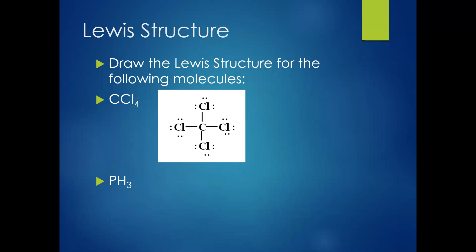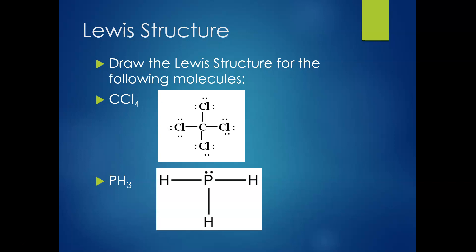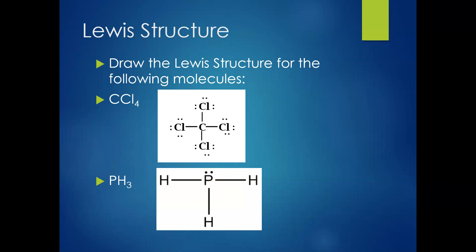For PH₃, your share should have worked out to six, meaning three lines. Phosphorus goes in the center as the first element, with the three hydrogens drawn symmetrically around the outside, one line to each. This gave each hydrogen two electrons — which is what hydrogen wants — but phosphorus wants eight and only had six from the lines, so we drew one unshared pair on phosphorus. If you didn't get these right, I recommend reading over the rules and watching the example again.